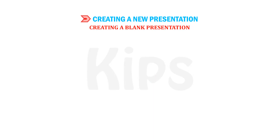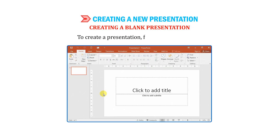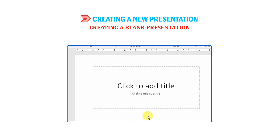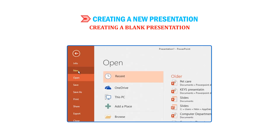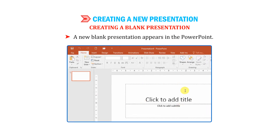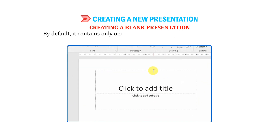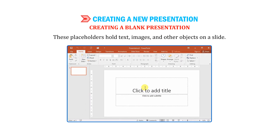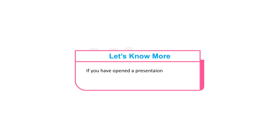Now let us learn how to create a blank presentation. To create a presentation, follow the given steps: Start PowerPoint. When the Start Screen appears, either press the Escape key or select the blank presentation thumbnail. Or if the PowerPoint application is already running, click on the File tab to go to Backstage View. Select the New option and then click on the blank presentation. A new blank presentation appears. By default, it contains only one slide with dotted rectangular boxes called placeholders. These placeholders hold text, images and other objects on a slide. If you have opened a presentation recently, you can browse your recent list rather than searching for the file.